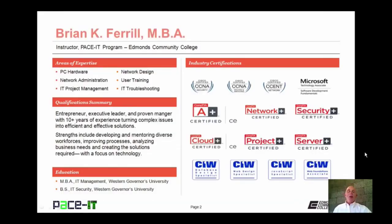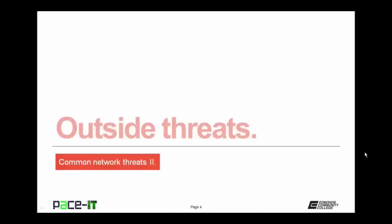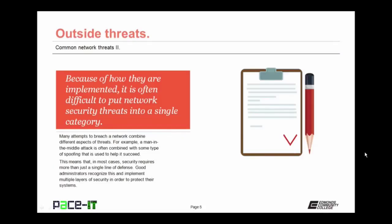Hello, I'm Brian Farrell and welcome to Pace IT's session on Common Network Threats Part 2. Today I'm going to be talking about more outside threats and then I'm going to be talking about some wireless network threats. Because of how they are implemented, it is often difficult to put network security threats into a single category. Many attempts to breach a network combine different aspects of different threats. That means that in most cases, security requires more than just a single line of defense. Good administrators recognize this and implement multiple layers of security in order to harden and protect their systems.